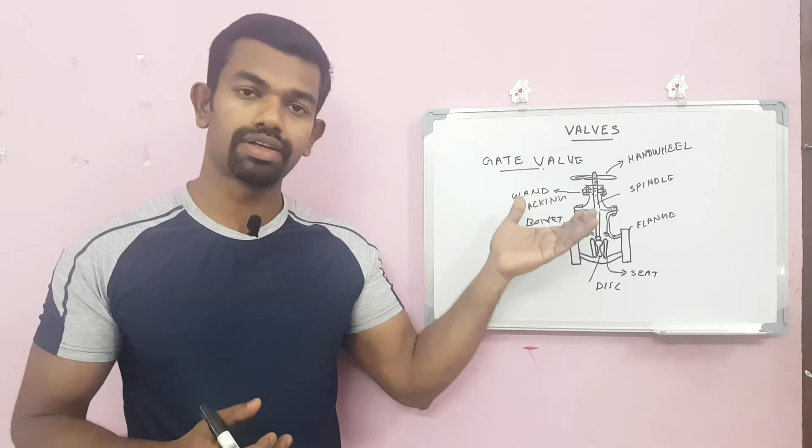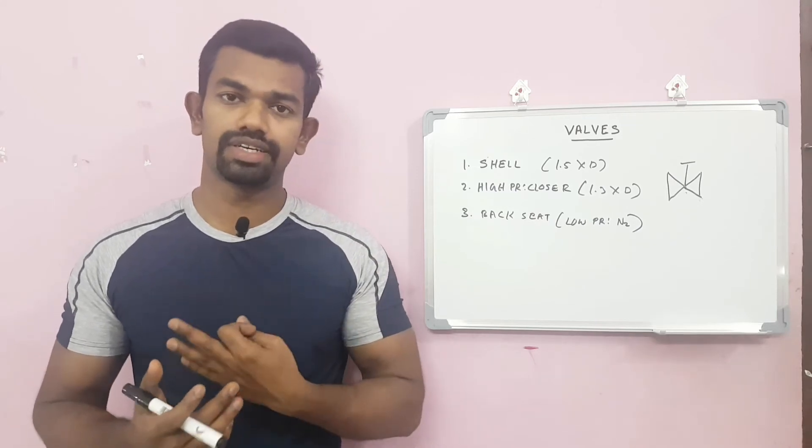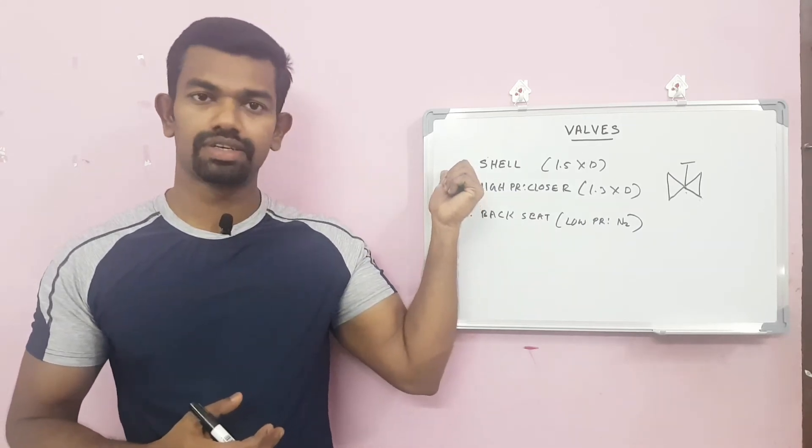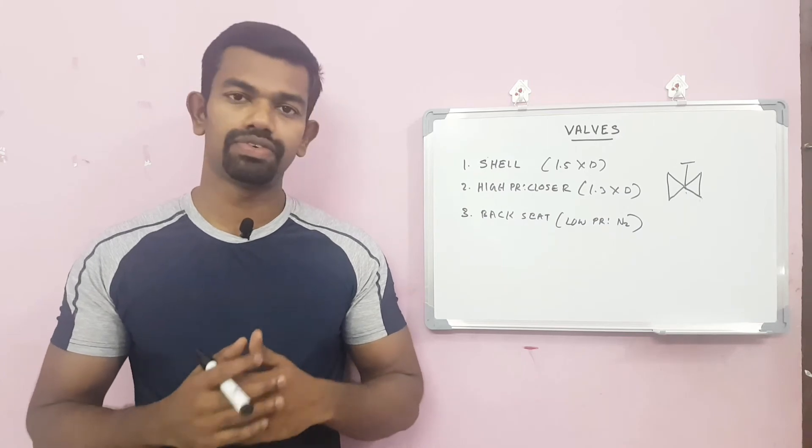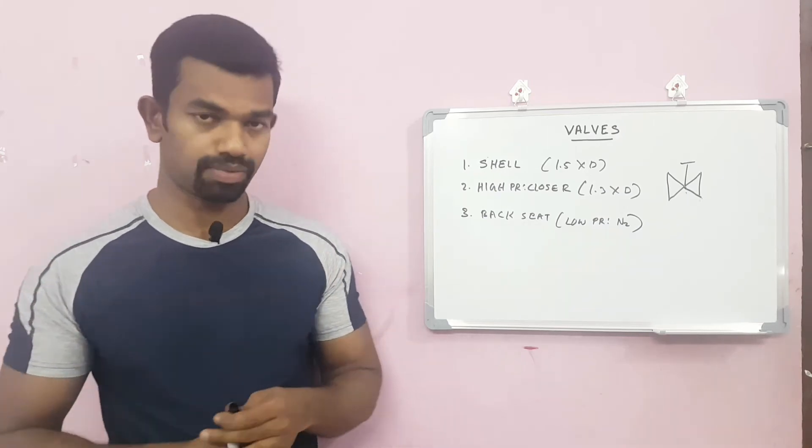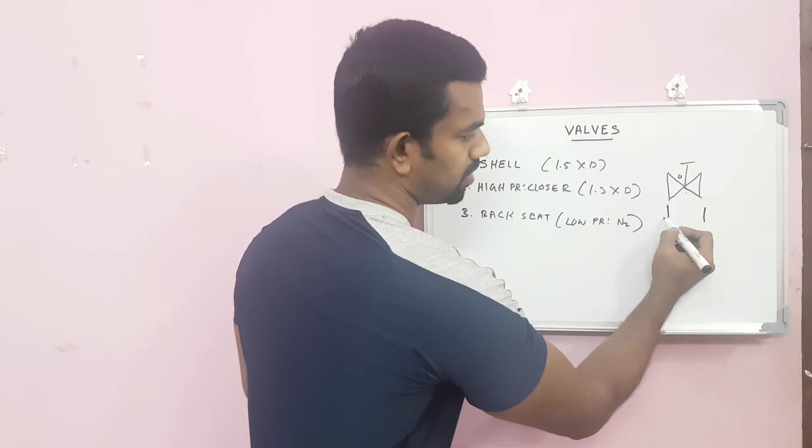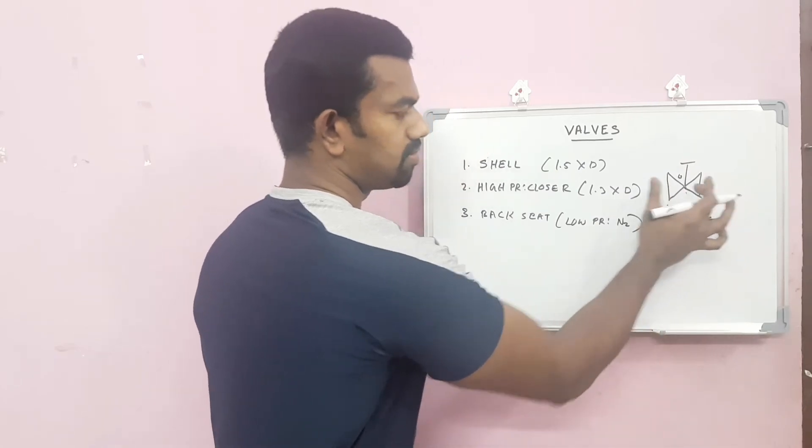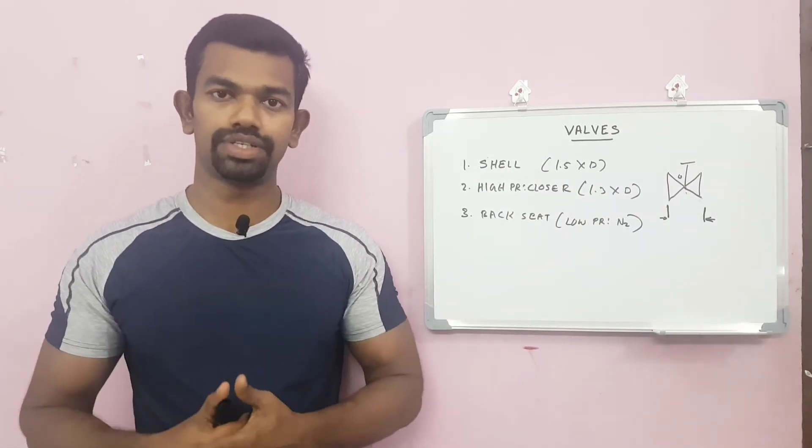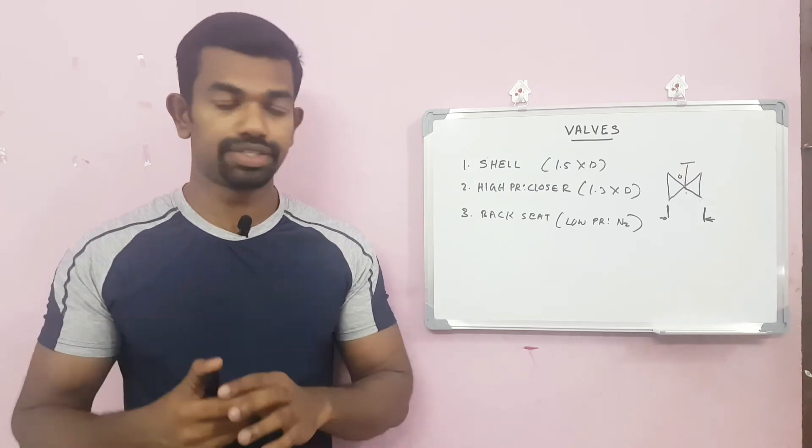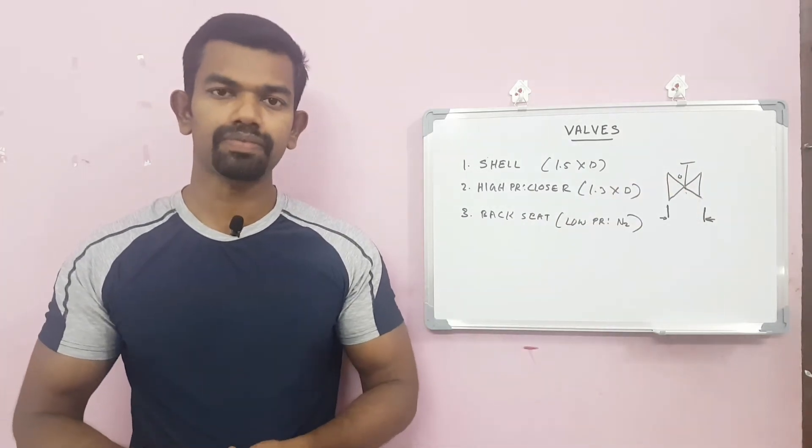Now we can take a look at the testing methods of a valve. There are three stages for testing the valve. First one is high pressure shell test. For the shell test, the valve will be in open condition and we will isolate both sides of the valve. The valve will be open and we will apply pressure on both sides with 1.5 times of design pressure. For example, if the design pressure is 20 bar, we will apply 30 bar pressure in this area. The valve will be in open condition. This is the shell test.